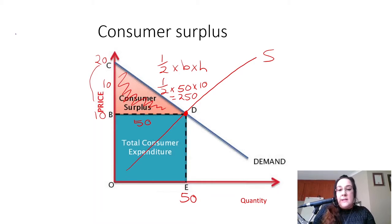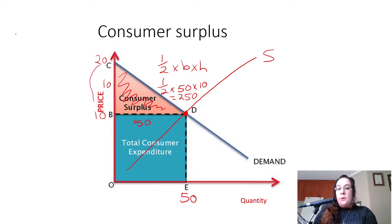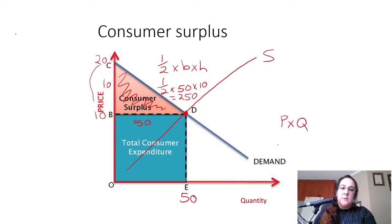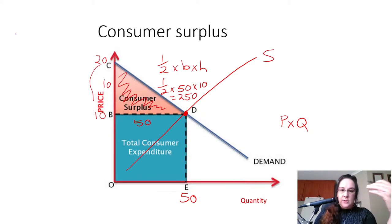At the same time, you would also be expected to work out the area of the square or rectangle. You could use the formula for expenditure, which is similar to the formula for revenue: price times quantity. So you have two options, but typically you will have to identify the shapes and discern which areas to work out.